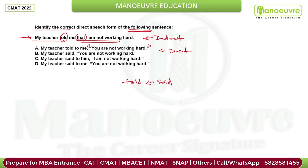To 'tell' means we don't report what was said using 'set to him', which is wrong because 'me' does not match 'him'. So the answer is D.